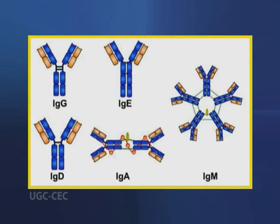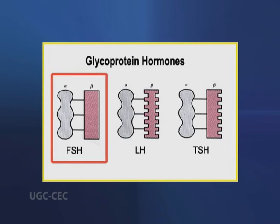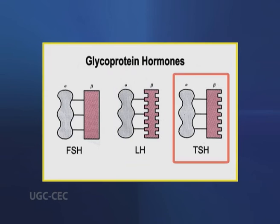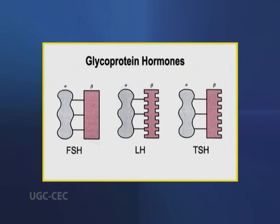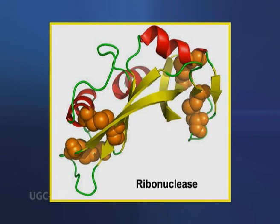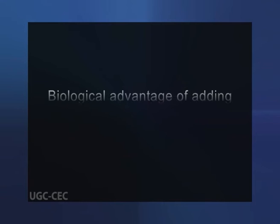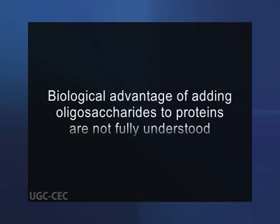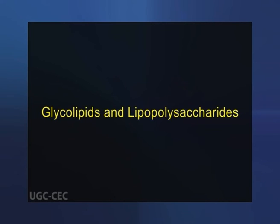For example, immunoglobulins, antibodies, and certain hormones such as follicle-stimulating hormone, luteinizing hormone and thyroid-stimulating hormone are glycoproteins. Many milk proteins including lactalbumin and some of the proteins secreted by the pancreas, such as ribonucleases, are glycosylated, as are most of the proteins contained in lysosomes. The biological advantages of adding oligosaccharides to proteins are not fully understood.